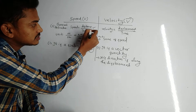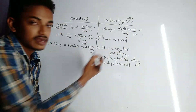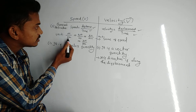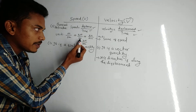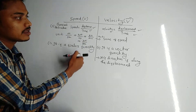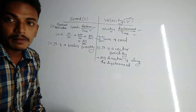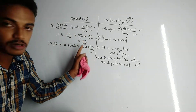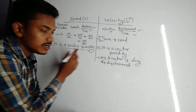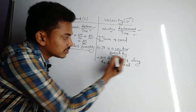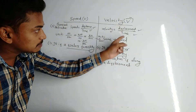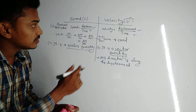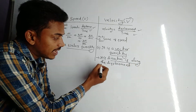The general definition of speed is distance by time, and velocity is displacement by time. The unit of speed is meter per second, kilometer per hour, kilometer per minute, or kilometer per second. The unit of velocity is exactly the same. Speed is a scalar quantity and velocity is a vector quantity, because velocity is displacement by time — since displacement is a vector quantity, velocity is also a vector quantity. The direction of velocity is along the direction of displacement.